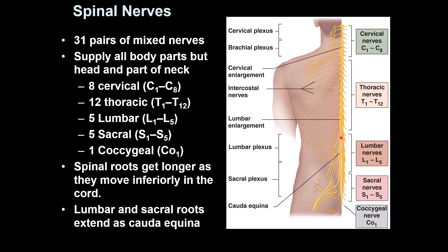You can see here this is the end of the spinal cord around L1–L2 — this is the conus medullaris. And as you can see, this is the cauda equina, where these nerve fibers are getting longer and longer as they are trying to exit or enter the spinal cord.